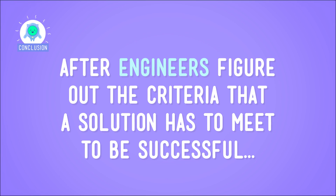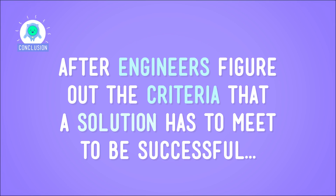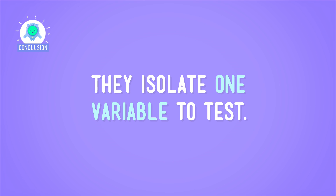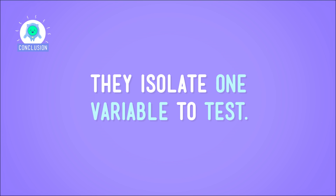Not only is doing several trials helpful at the bowling alley, but it's also an important part of the process that engineers use when solving a problem. After engineers figure out the criteria that a solution has to meet to be successful, they isolate one variable to test. Then they change that variable between trials, and if the criteria are met, then the solution is a winner — just like we are at bowling.